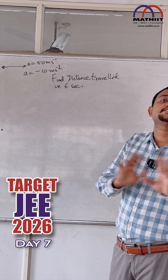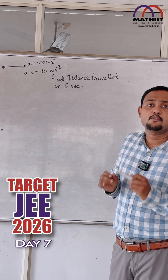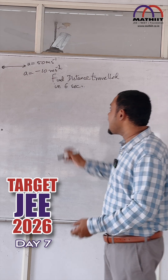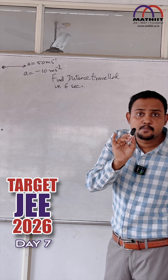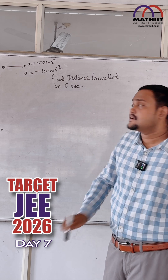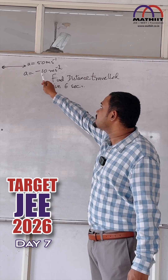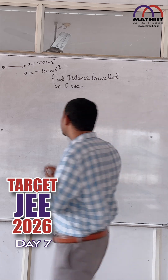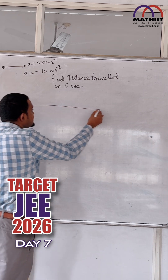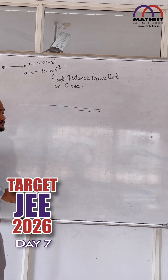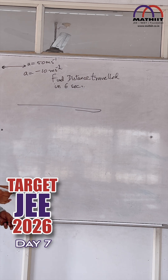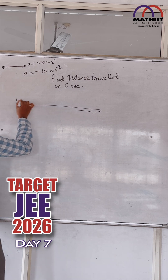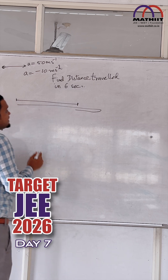Do you know why? Because s in that equation is displacement. After 5 seconds, velocity becomes 0. So the particle goes forward like this, and then comes back like this. So if you directly use s equal to ut plus half at squared, you will get the displacement only.